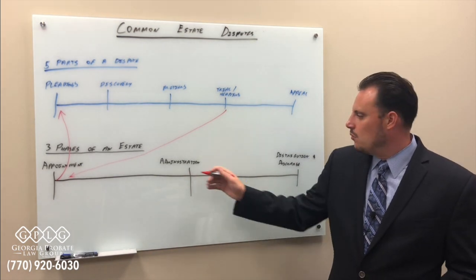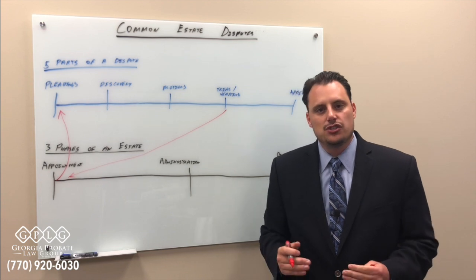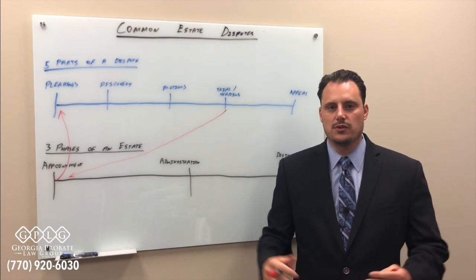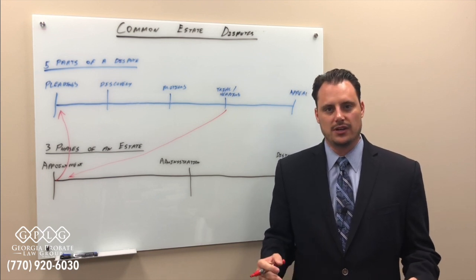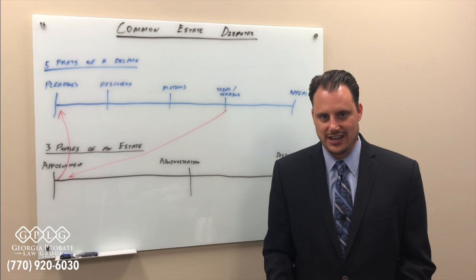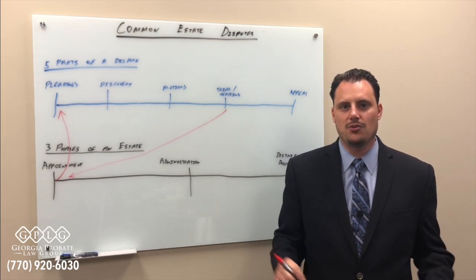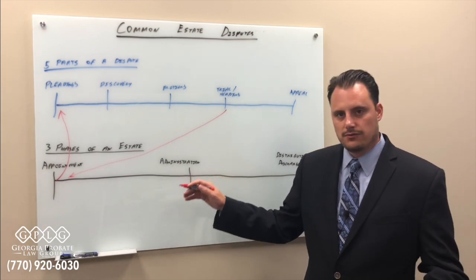In the administration phase, one example would be, I don't think what the executor is doing is right. I think that they're not following the duties that they have to the estate. And so judge, I would like an accounting of everything in the estate because I don't even know what's going on. And I would also like for you to remove that executor. And so what would happen here is very similar.